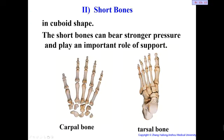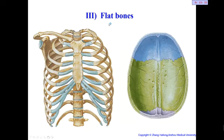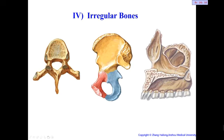The second bone type is the short bone, often found in the wrist or ankle. Short bones are small with smooth surfaces so they can move against each other freely. The third type is the flat bone — for example, the bones of the skull, the rib, and the sternum. Flat bones often protect body cavities such as the thoracic and cranial cavities. The fourth type is the irregular bone — the vertebrae, hip bone, and maxilla are all irregular bones whose shape cannot be easily described.